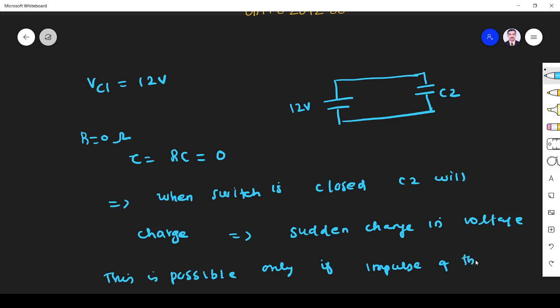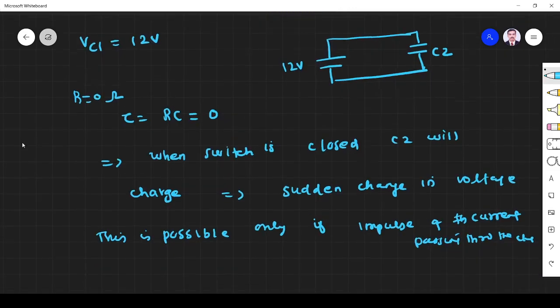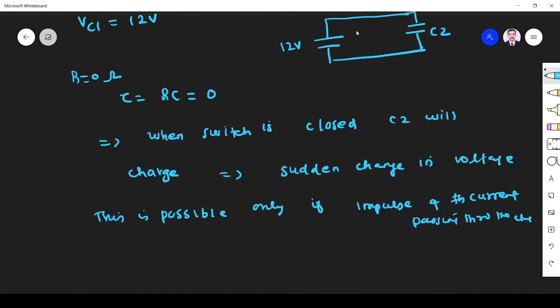We know that impulse of current will pass through the circuit. Then only the capacitor will charge immediately to the final value, steady state value. That is possible only when impulse of current passes through that.